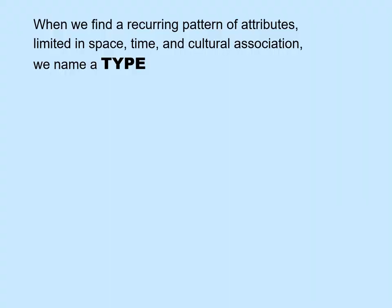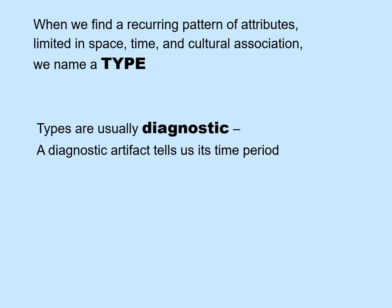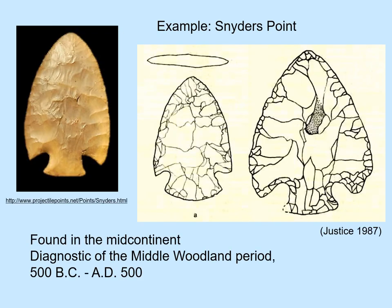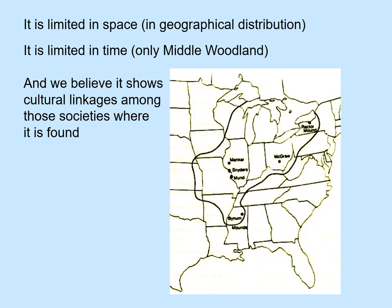When we find a recurring pattern of attributes that is limited in space, time, and cultural association, we name a type. Types are usually diagnostic — that is, they can tell us the time period of the artifact, and we hope the artifact can tell us the time period of our deposit. An example of a diagnostic point is the Snyder's point — a very thin, very well-made biface found in the mid-continental United States, diagnostic of the Middle Woodland, particularly the Hopewell. It is limited in geographic distribution and in time, and we believe it shows cultural linkages among those societies where it is found.